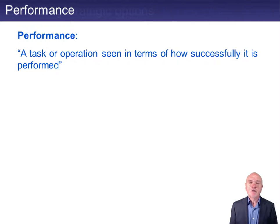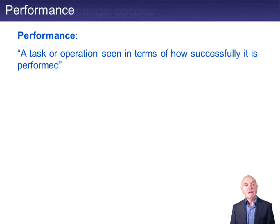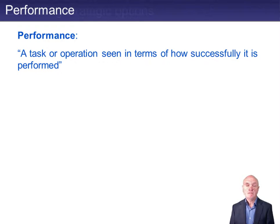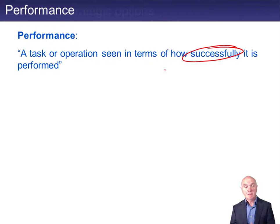So now we're going to look at performance. Performance — what is it? Performance measurement and performance management. Performance can be defined as a task or operation seen in terms of how successfully it is performed. And as soon as we have this idea of how successfully it is performed, there is an implication that there must be some sort of judgment, some sort of measurement, really, before we can talk about performance.